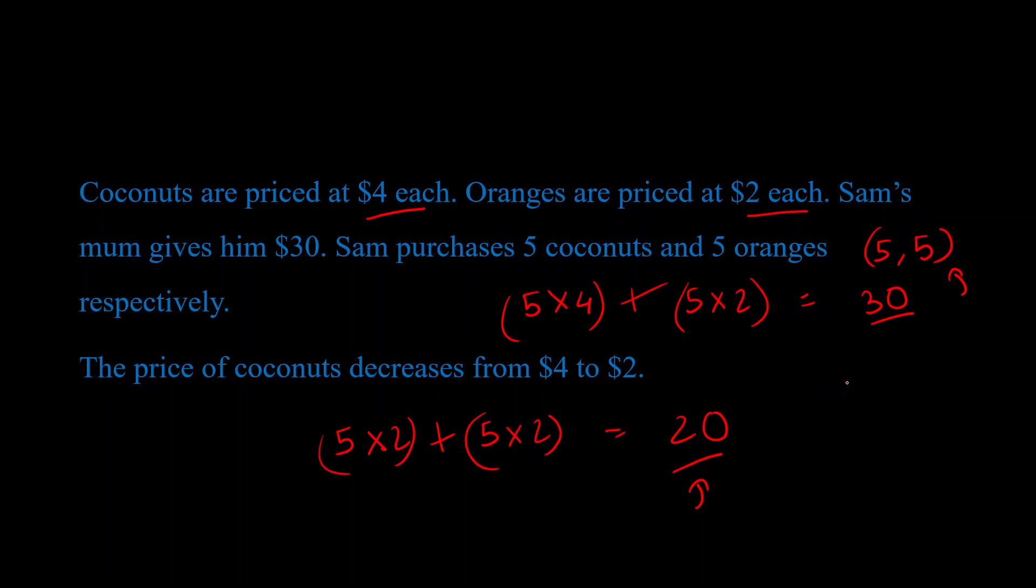So now after the price change, maybe Sam doesn't want to buy 5 coconuts anymore, maybe he wants to buy more coconuts in place of oranges. So Sam is like, let us assume Sam now wants to buy 8 coconuts and 2 oranges, completely based on his preferences. And that is exactly the idea behind the substitution effect.